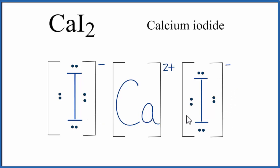They were lost and then gained by the non-metals. This is Dr. B with the Lewis structure for CaI2 calcium iodide. Thanks for watching.